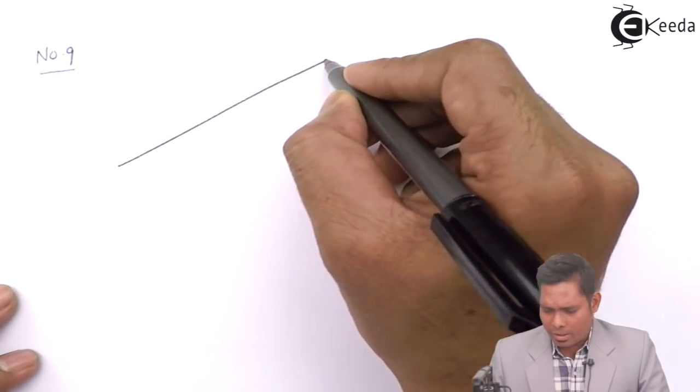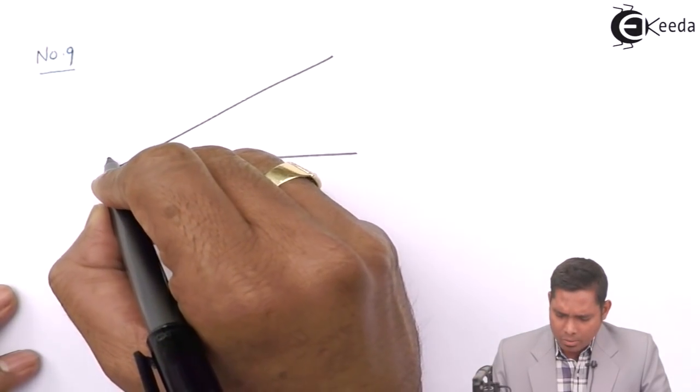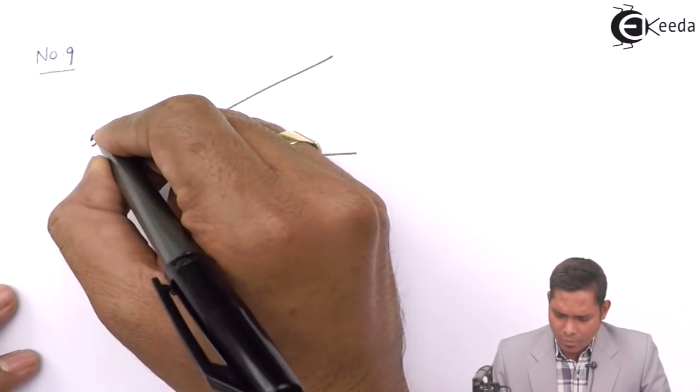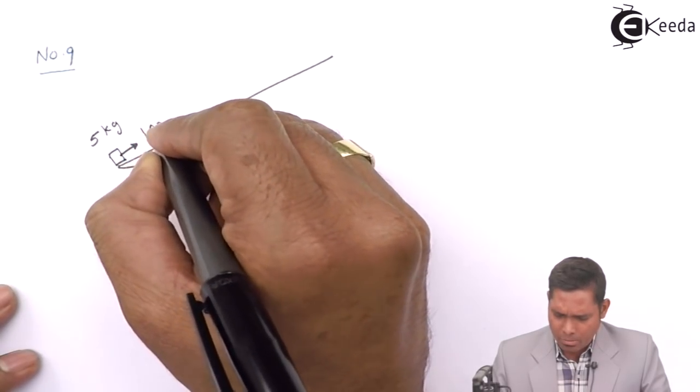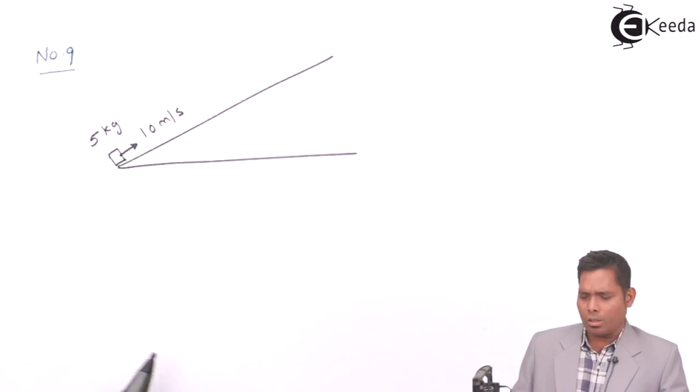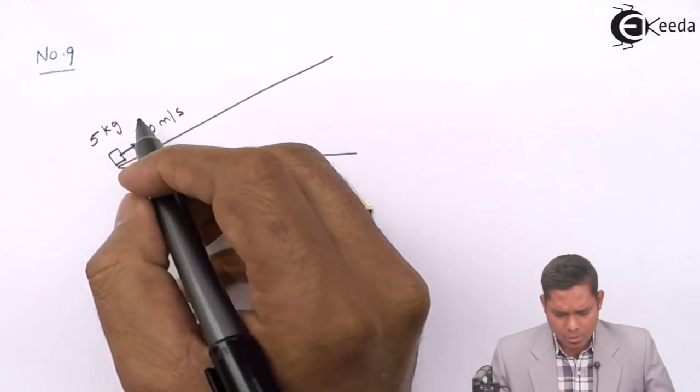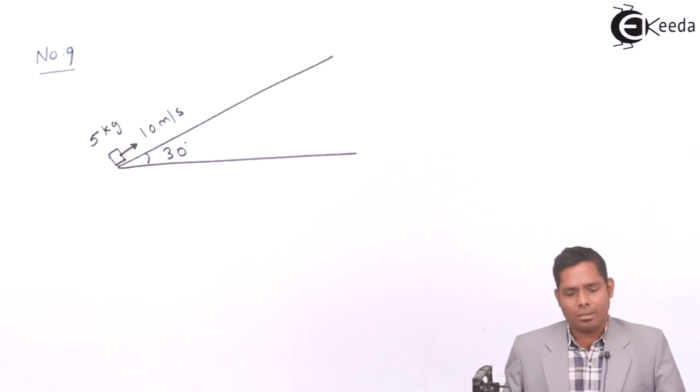A block of mass 5 kg is projected up the plane with 10 meters per second. This is the velocity with which the object is projected up the inclined plane, and the angle of inclination of this plane is 30 degrees. This is the angle.